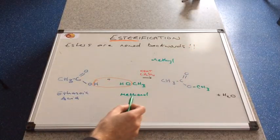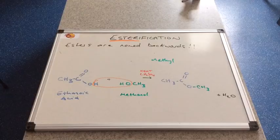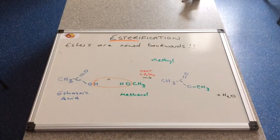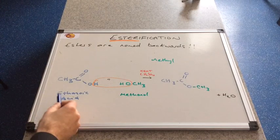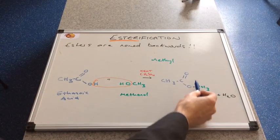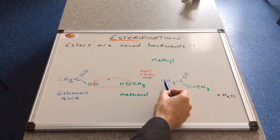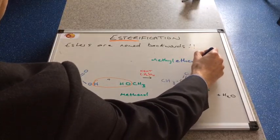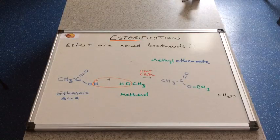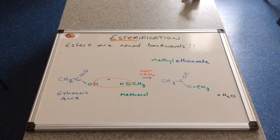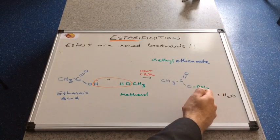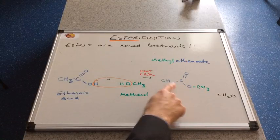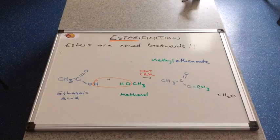So the methanol has provided a methyl part for the ester's name. And now we'll look at the blue part of the name. That's come from the carboxylic acid. So ethanoic acid has supplied this bit here. And this is called ethanoate. So this ester is called methyl ethanoate. That's the first part of the name from the alcohol: methyl. Second part from the acid: methyl ethanoate.